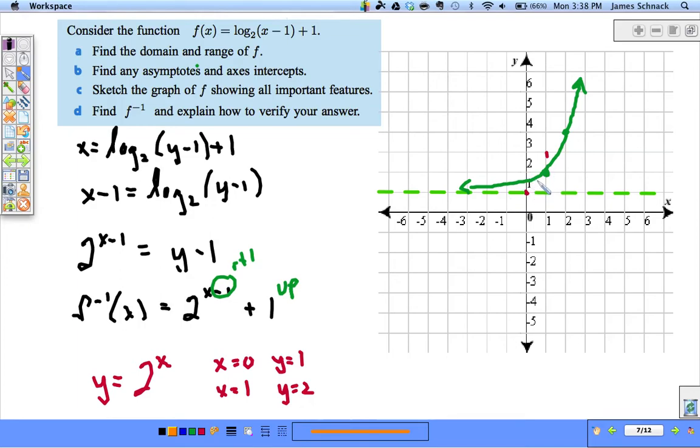Remember, the points just flip-flopped their domain and range. Their X and their Y. And my horizontal asymptote becomes a vertical one. Isn't that nice, guys?